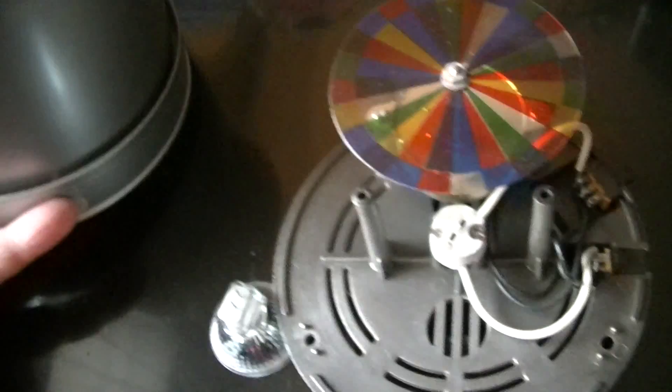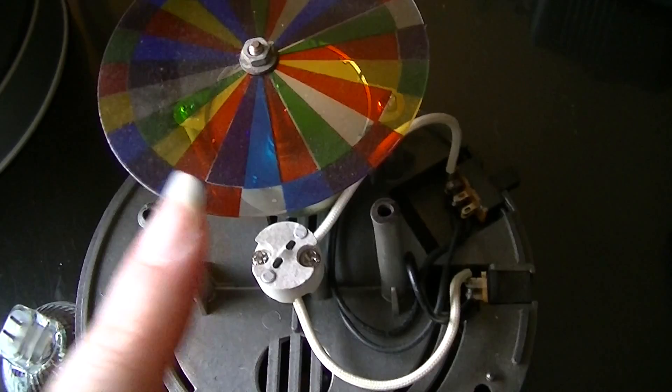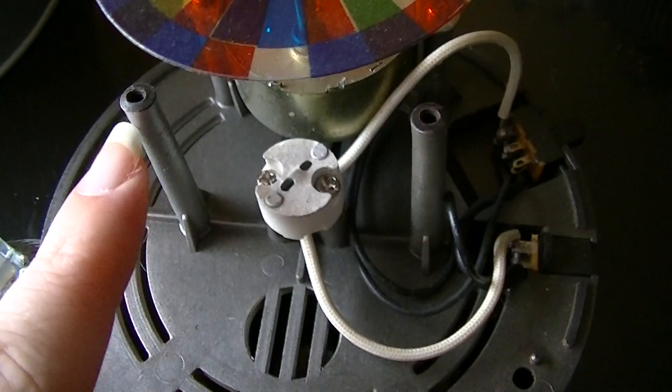And then the base is where the fiber optic wheel, that's the color wheel. Oh that was my cat sneezing. The color wheel, there's the motor and the light sits across these two poles.